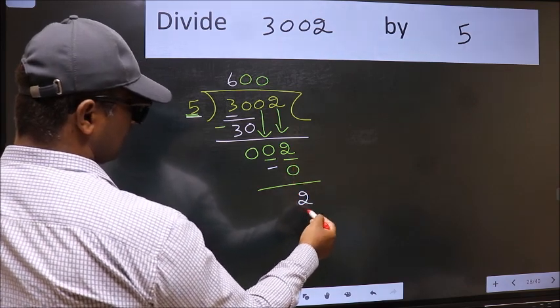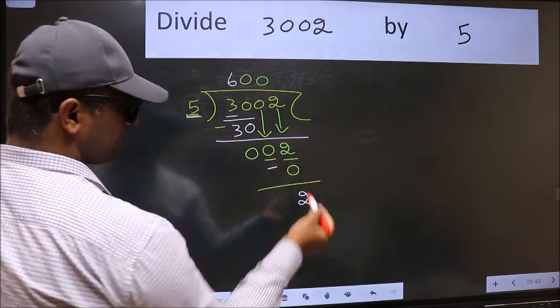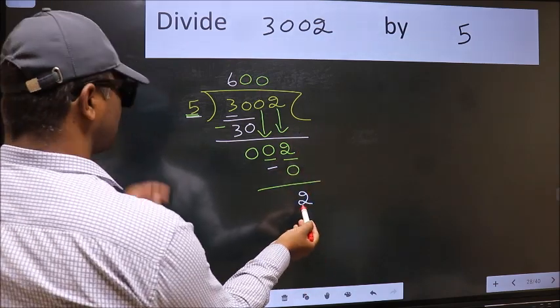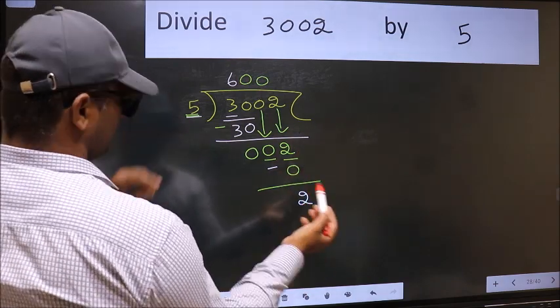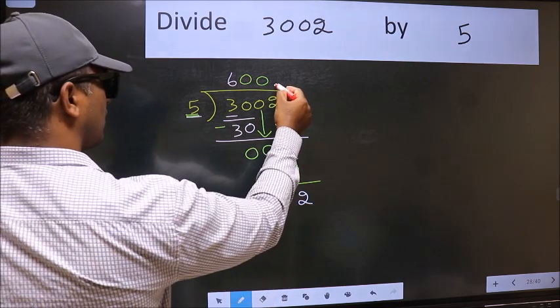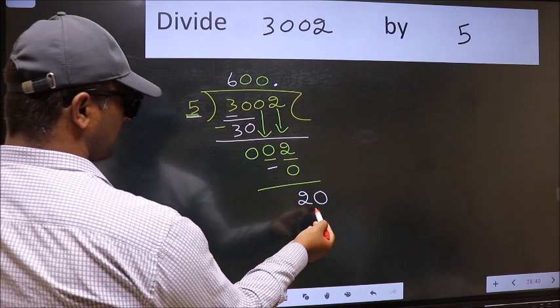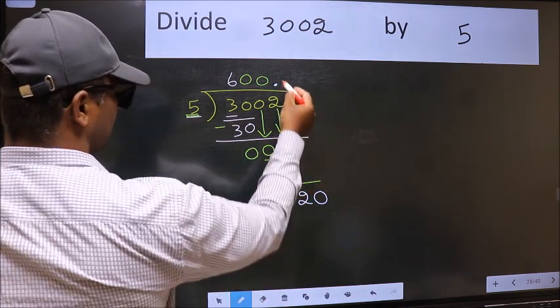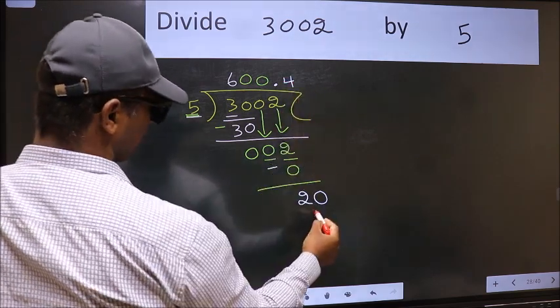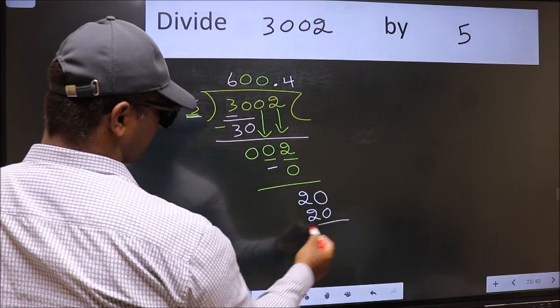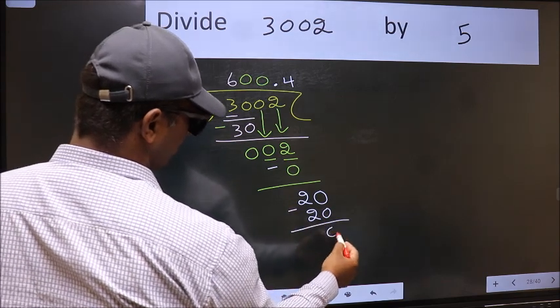Over here, we did not bring any number down, and 2 is smaller than 5. So now we can put dot and take 0. So 20. When do we get 20 in 5 table? 5 fours is 20. Now we should subtract. We get 0.